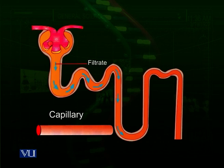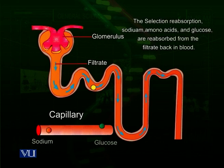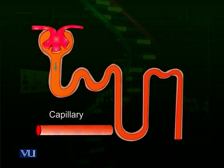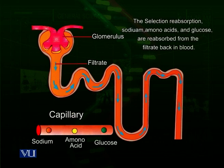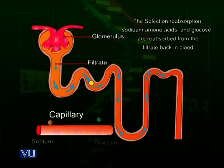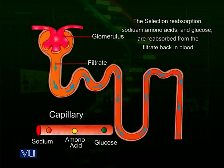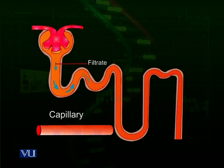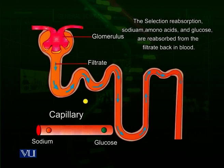These materials are present in the filtrate, and as they pass down the convoluted tubules, they are absorbed by the nearby capillaries. Because the capillary is in close vicinity and due to differences in concentration gradients, sodium, amino acids, and glucose are reabsorbed from this filtrate and go back to the blood. So from the very first part of the convoluted tubule, these important materials and molecules are returned to the blood.